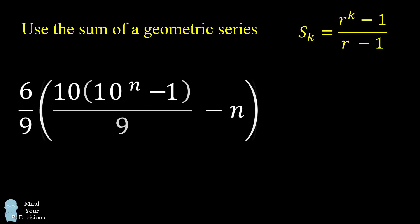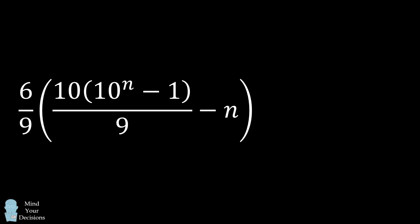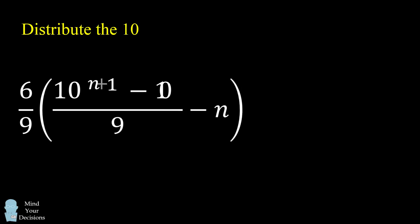So we end up with the following formula. And this will be very close to the answer I presented earlier once we distribute the 10. So we have 10 to the power of n plus 1 minus 10 all over 9. Then we subtract n, and then we multiply the entire thing by 6 ninths.